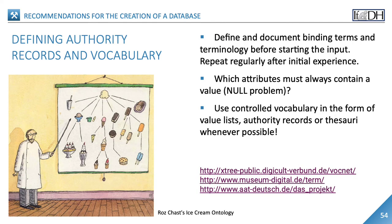In order to save a lot of time, these determinations should always be made before you start typing. This also means that you define and document binding terms and terminology. After the first experiences with data entry, however, you should regularly check the thesauri and ontologies and readjust them if necessary. You should also clarify how to deal with the null problem — that means which attributes must always contain a value and where fields may remain empty. In addition to the primary key, it is advisable to always require a value for the central instances such as object category, the inventory number or the author's name. And use controlled vocabulary in the form of value lists, authority records or thesauri whenever possible.